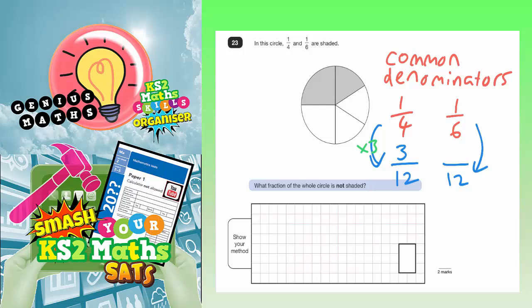With the sixth, you're times-ing the six by two to get 12. So whatever you do to the bottom number, you've also got to do to the top number. So you need to do one times two to get two. So one sixth is two twelfths.